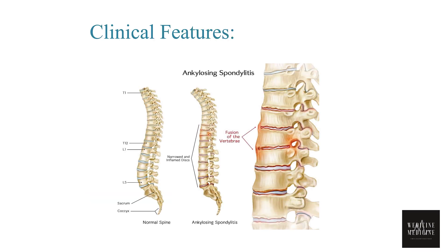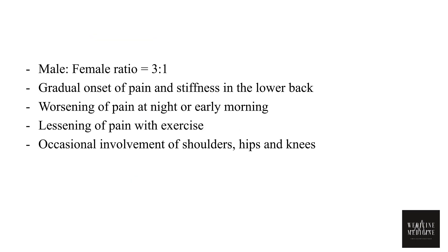The classic presentation is a young adult male who presents with gradual onset of pain and stiffness of the lower back. Initially there is pain and stiffness in the joints, followed by cartilage destruction and bony erosion. As the condition progresses, there is resultant fibrosis followed by bony ankylosis or fusion. Ankylosing spondylitis affects males three times more than females.